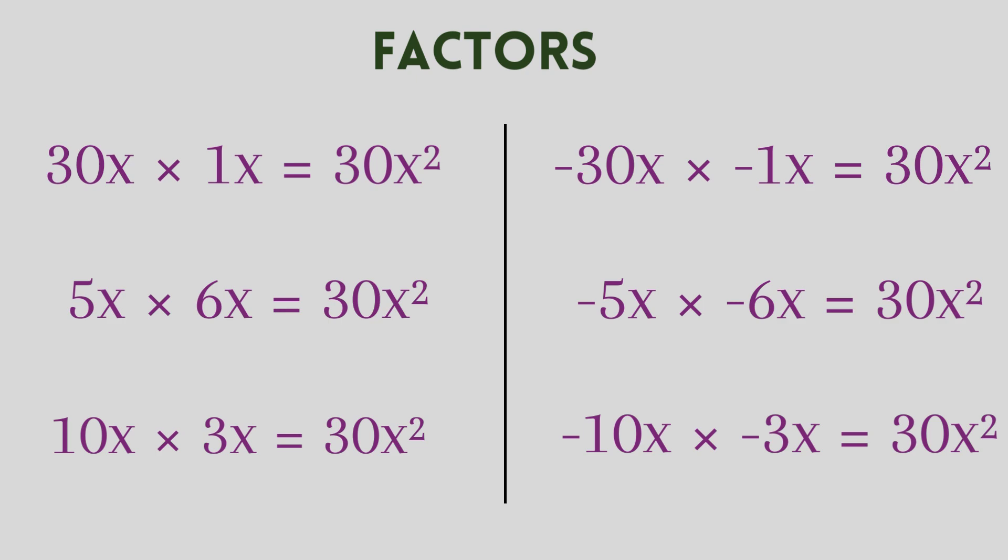Do remember that the sign is very significant. In 30x², the sign is positive. So the factors should be such that when multiplied, they give us plus 30x² only. Now these factors will be used in the later steps.